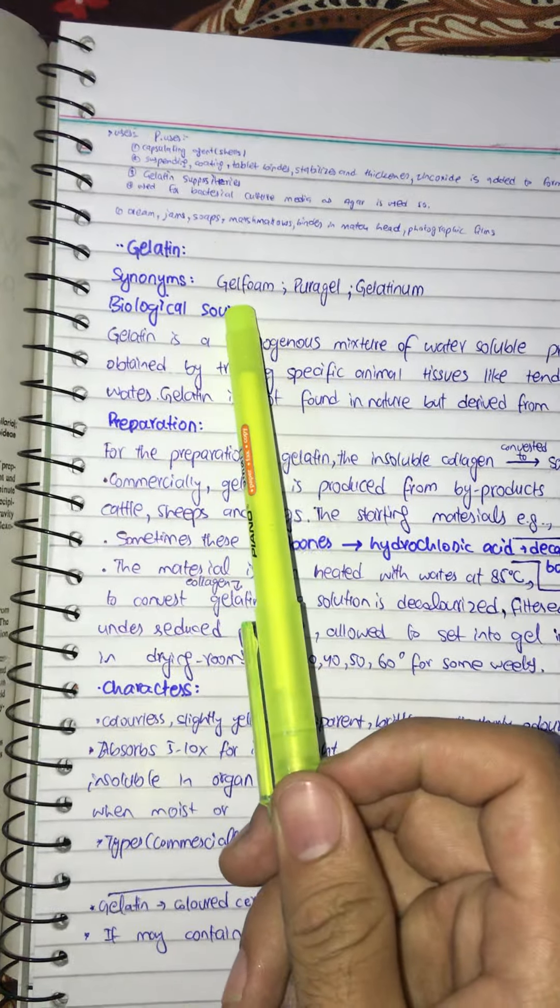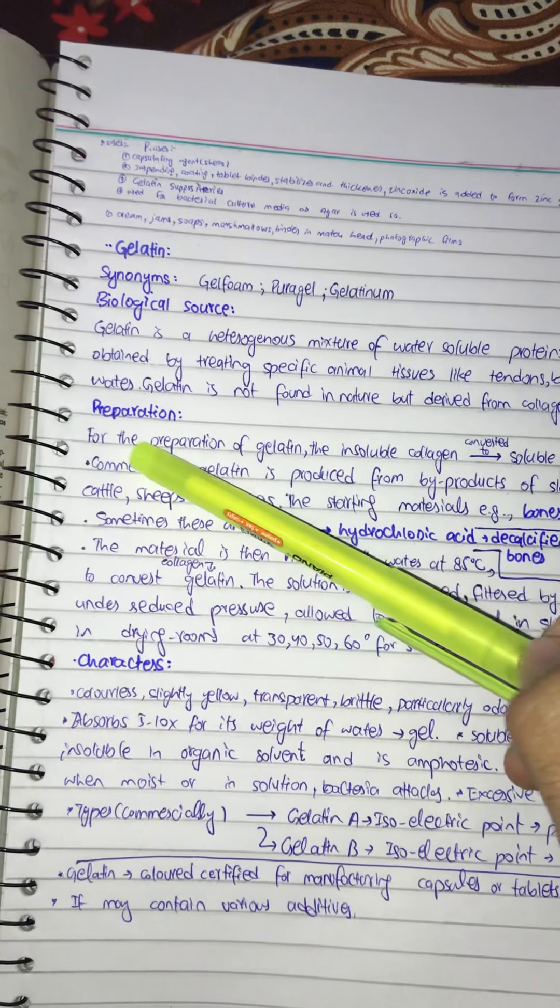Biological sources: gelatin is actually a heterogeneous mixture of water-soluble proteins of high molecular weight. They are obtained by treating specific animal tissues like tendons, bones, and ligaments with hot water. They're not found in nature but are derived from collagen by hydrolysis.